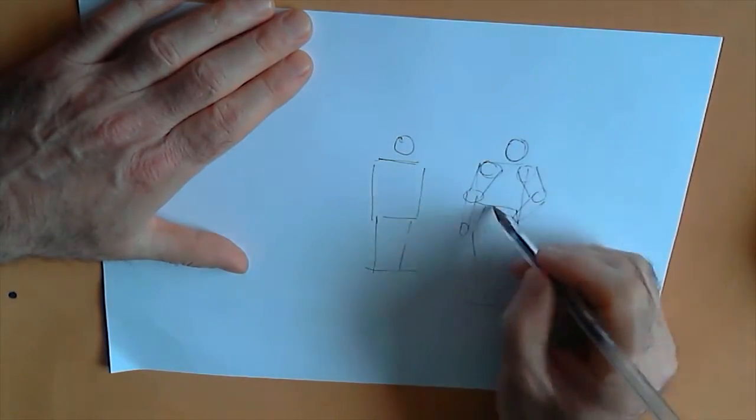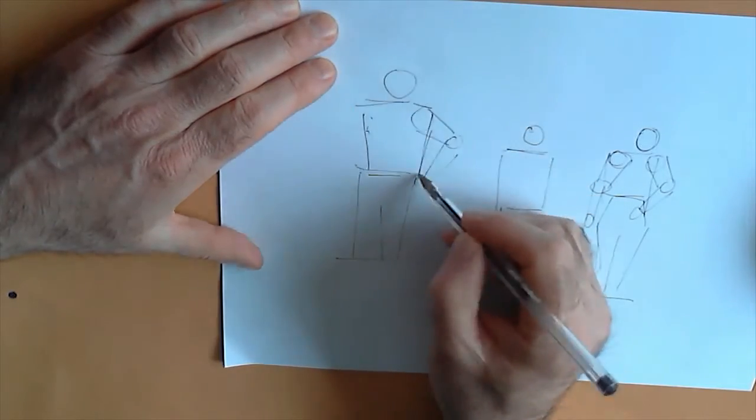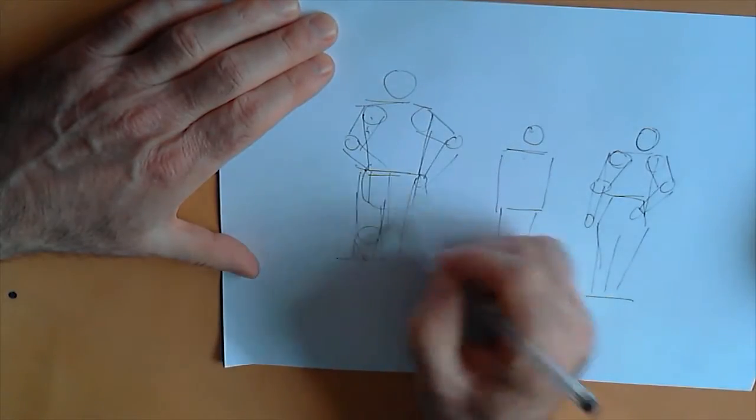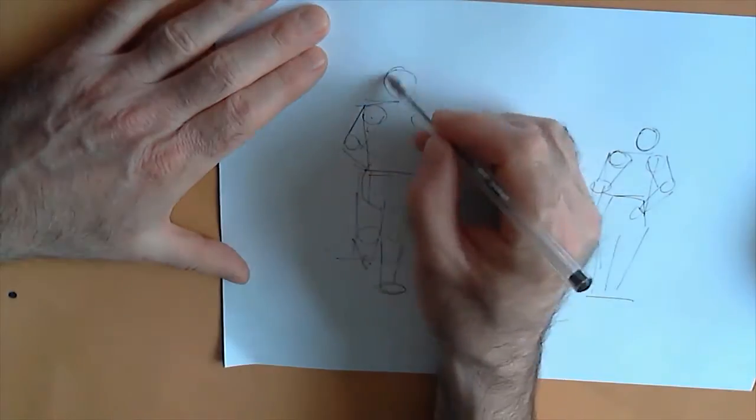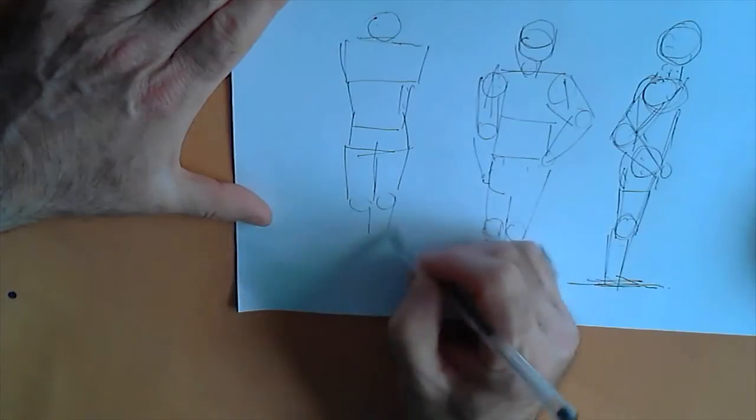When you're doing arms, think of them as a series of circles. A large circle at the shoulder, a smaller circle at the elbow, and join them on the outside with a line to the outside of each of those circles and you're going to get yourself an arm that looks relatively real.